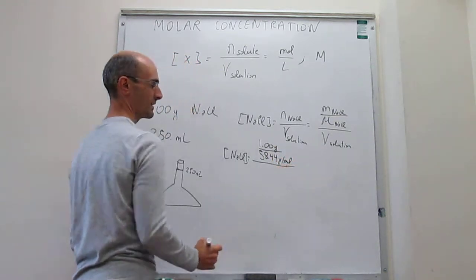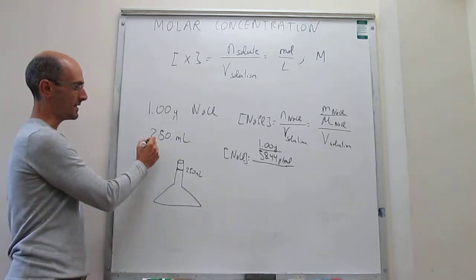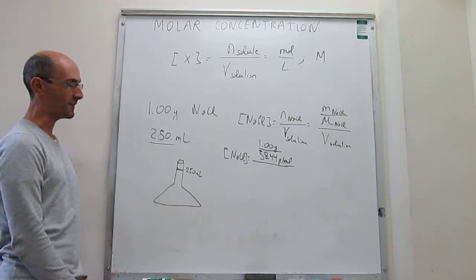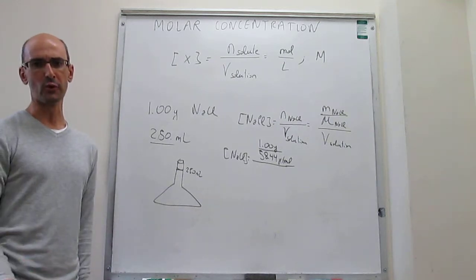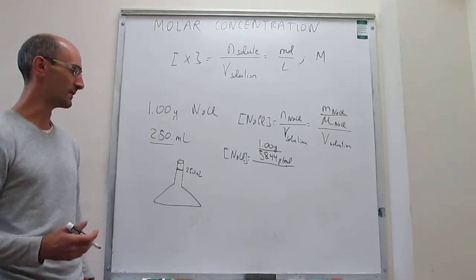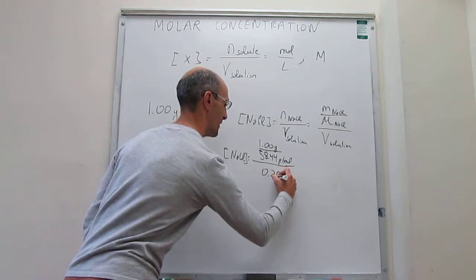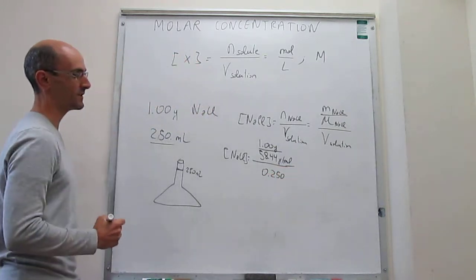And then here we just have to plug in what the volume of the solution is. Now, notice that the volume of the solution is provided in milliliters. But when we use molar concentration, that unit of volume is a liter. So we do a transformation from milliliters to liters to find that the volume in liters is 0.250 liters.